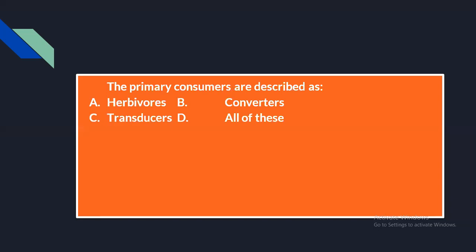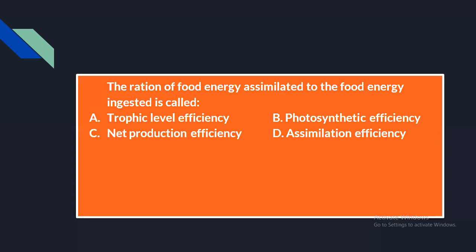The next question: primary consumers are described as — herbivores, converters, transducers, or all of these. Primary consumers are the first step in the food chain. Herbivores are those that consume plants — plant leaves and such things. So primary consumers are herbivores.